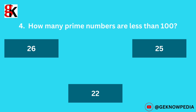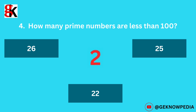Fourth question. How many prime numbers are less than 100? Options: 26, 25, 22. The correct answer is 25.